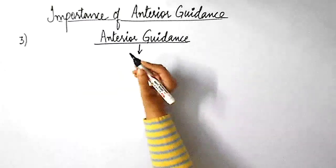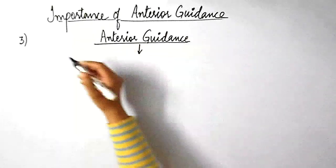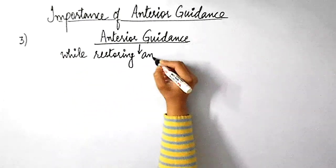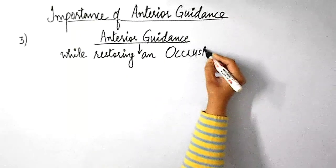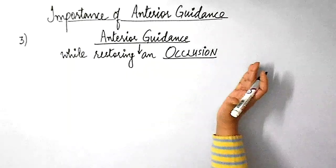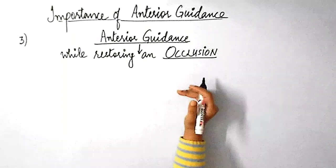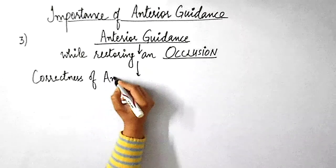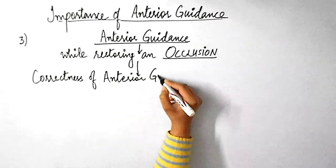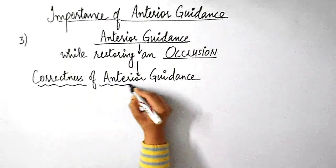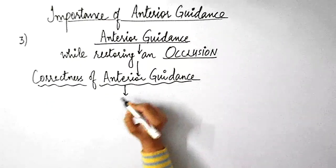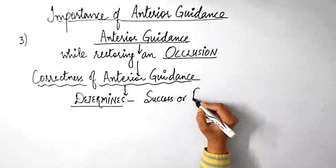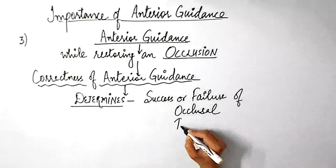Next to centric relation, the anterior guidance is the most important factor to be considered while restoring an occlusion. I've already talked in detail about centric relation in my previous videos — make sure to go through those videos, and I'll provide the links in the description box. The correctness of anterior guidance determines the success or failure of many occlusion treatments.